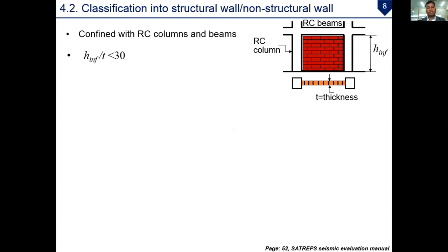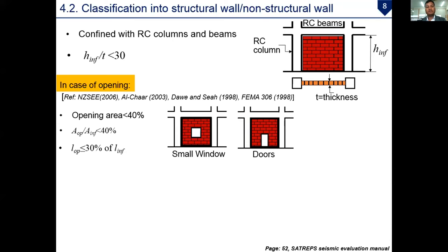Now, regarding the classification into a structural wall or non-structural wall, there are two main conditions. First, the RC masonry infill should be confined by RC columns and beams. Second, the height-to-thickness ratio of the infill should be less than 30. In the case of openings, if the opening area is less than 40 percent of the panel area, it can be considered a structural element. Also, if the length of the opening is less than 30 percent of the length of the infill, and the opening is located at the center, it can be considered a structural element.